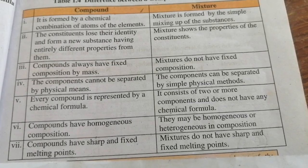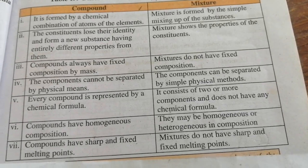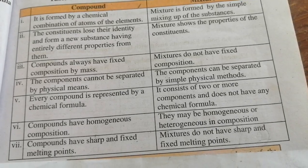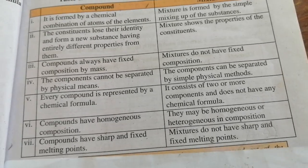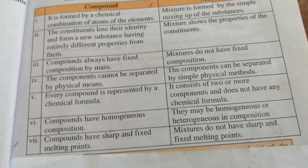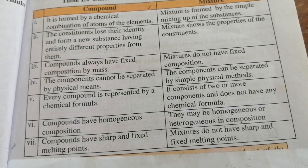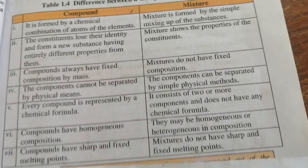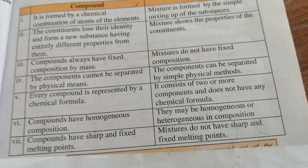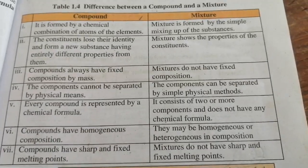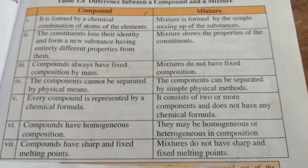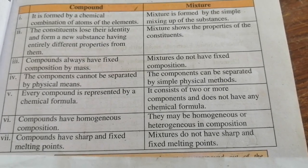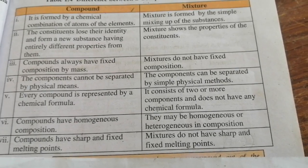In a compound, substances lose their identity when a new substance is made. The new substance has different properties from its components. But in a mixture, each substance retains its own properties. For example, if you eat a fruit chart, you will taste each individual fruit.